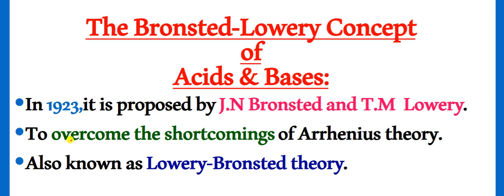And what was its purpose? Basically, to overcome the shortcomings of Arrhenius theory. Means the flaws that remained in Arrhenius theory, and the questions that Arrhenius theory could not answer, those questions should be answered and those shortcomings should be overcome. And this theory is also known as Lowery-Bronsted theory.